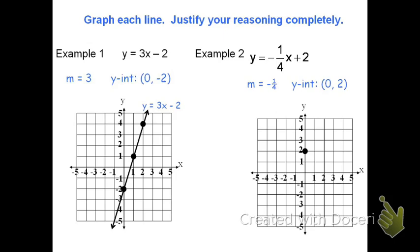Because it's negative one-fourth, we go down 1 and 4 to the right. I don't have enough room to do this again on my graph, so I'll do the opposite. The opposite would be to go 1 up and 4 to the left. I really like having 3 points because it helps me get my line straight. Taking my ruler, I can draw the line and write the equation next to it.